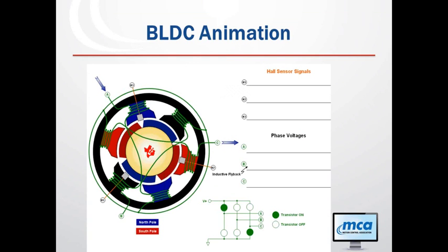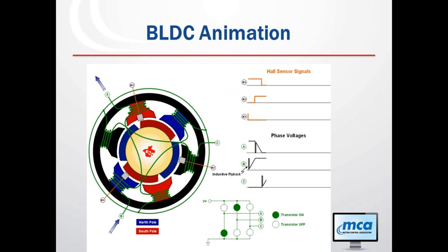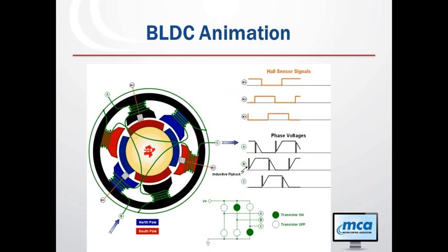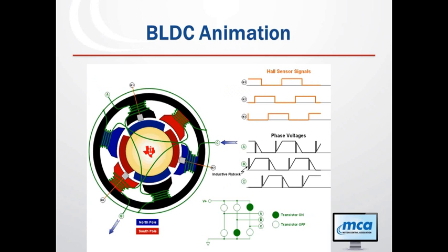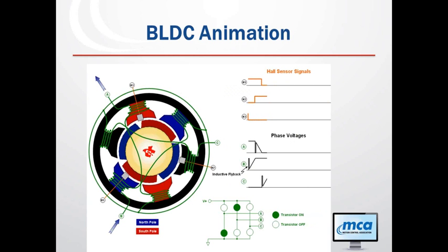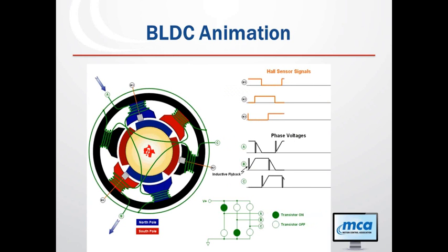An animation shows how hall sensors commutate the motor. With three hall sensors you get six logic states. Depending on whether each digital hall sensor is high or low, two phases are on at any point in time — either a low side or a high side. Solid green circles show transistors in the on state and white circles show the off state. At any one point in time, one of the phases will be high-Z while the other phases are in a high or low state.